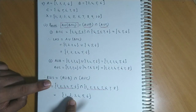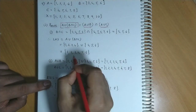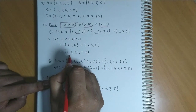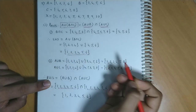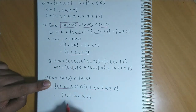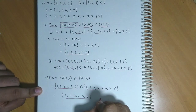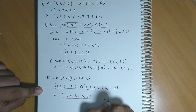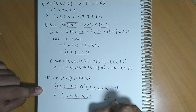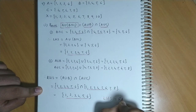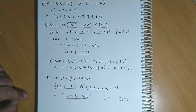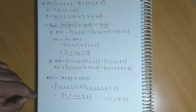So we get the right hand side. Ab left hand side mein bhi {1, 2, 3, 4, 5, 6} aaya tha answer. Right hand side mein bhi {1, 2, 3, 4, 5, 6} hai. So therefore we could say left hand side is equal to the right hand side. Hence proved.